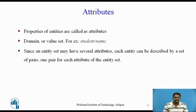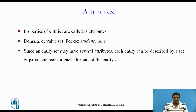Properties of the entities are called attributes. For each attribute, there is a set of permitted values called the domain or value set of that attribute. Formally, an attribute of an entity set is a function that maps from the entity set into a domain. Since an entity set may have several attributes, each entity can be described by a set of pairs — one pair for each attribute. Attributes in the ER model can be characterized by the following types: simple, composite, multivalued, and derived.